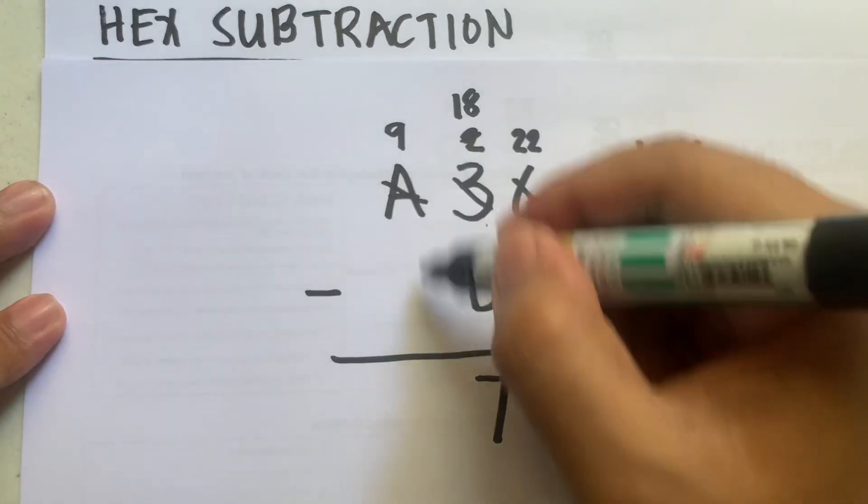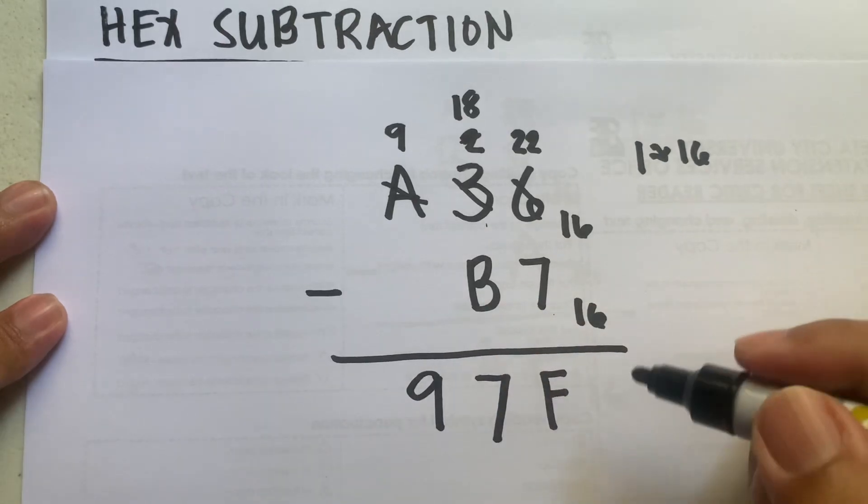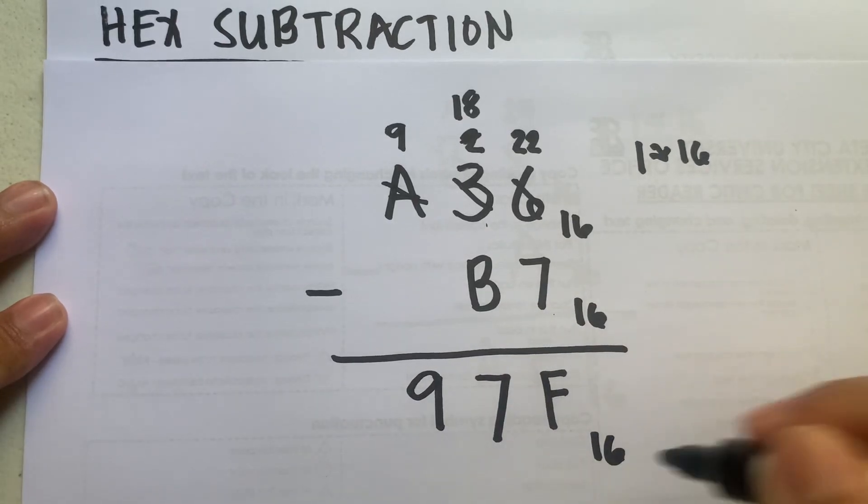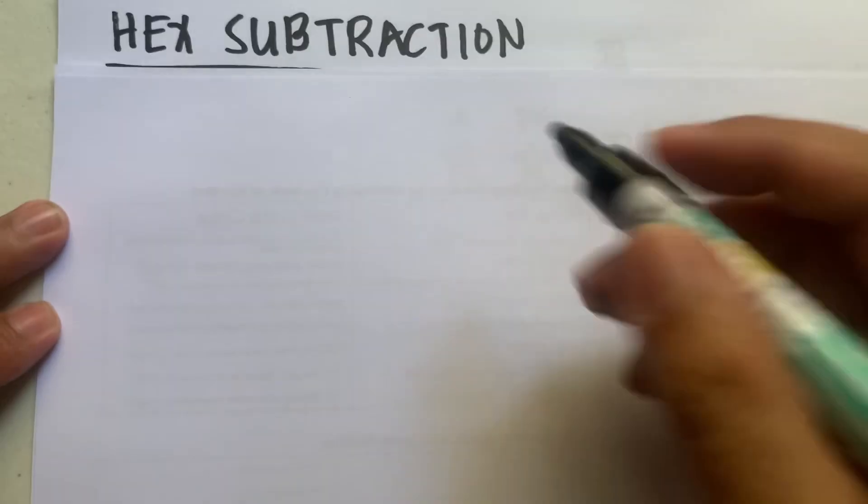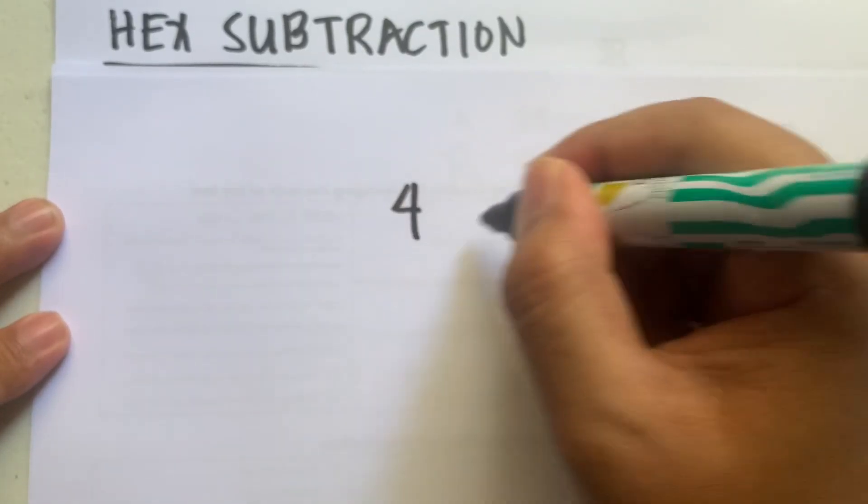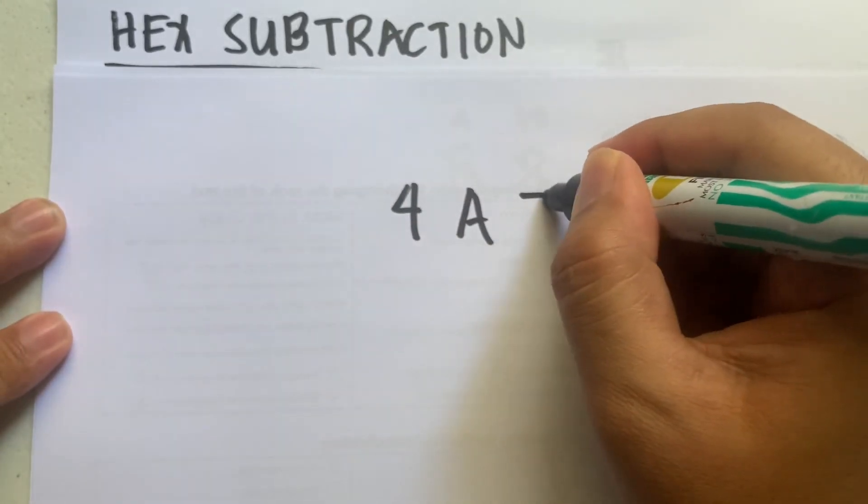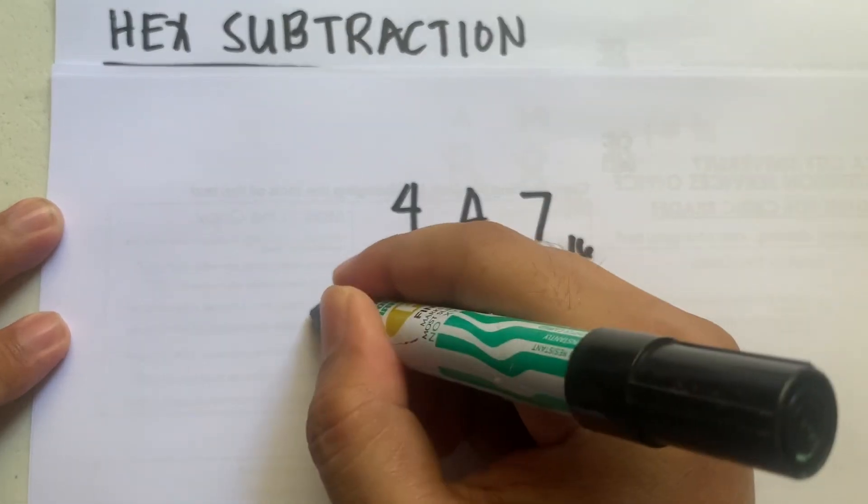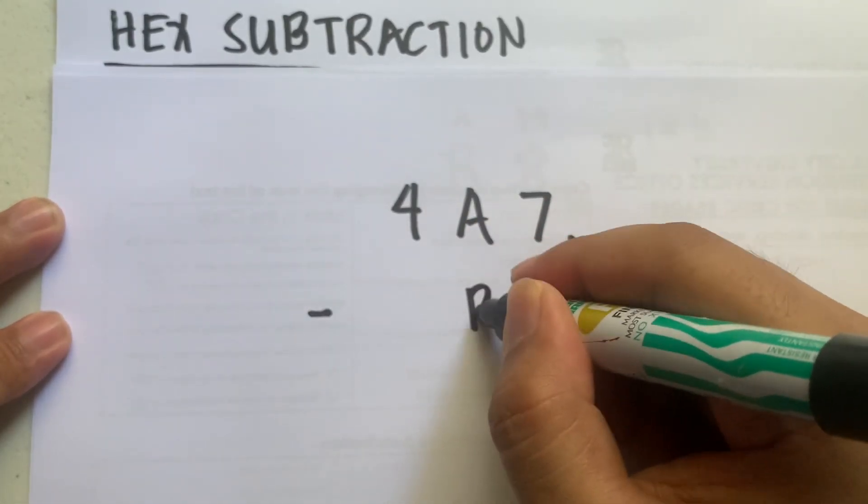Then we bring down 9, so the answer is 97F. For our last example, say we are given 4A7 in hexadecimal minus B9.